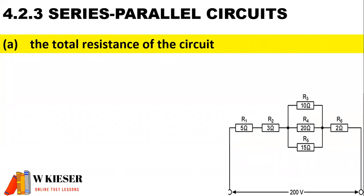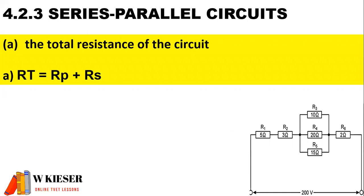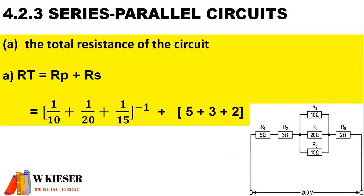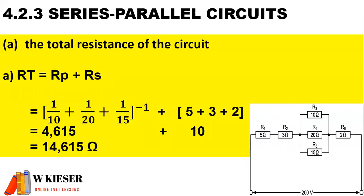In this last example, we have a series-parallel combination and need to determine the total resistance. R1, R2, and R6 are connected in series, and this combination is connected in series to a parallel branch with resistors R3, R4, and R5 connected in parallel. To determine the total resistance, it will be the parallel branch plus the series resistors. The parallel branch is calculated as 1 over R3 plus 1 over R4 plus 1 over R5, all to the power of minus 1, then we add the series resistors: the 5 ohm, the 3 ohm, and the 2 ohm resistor. Adding those two values together, we end up with a resistance total of 14.615 ohms.